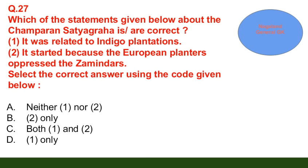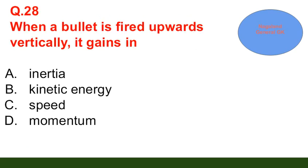Question number 27: Which of the statements about the Champaran Satyagraha is correct? Statement 1: it was related to indigo plantations. Statement 2: it started because European planters oppressed the zamindars. Options: A: neither one nor two; B: two only; C: both one and two; D: one only. The correct answer is option D — only statement one: it was related to indigo plantations.